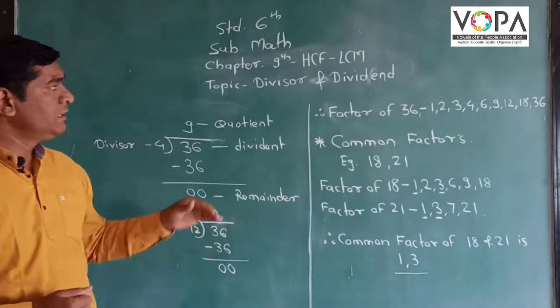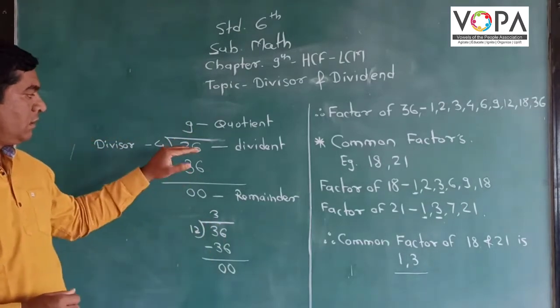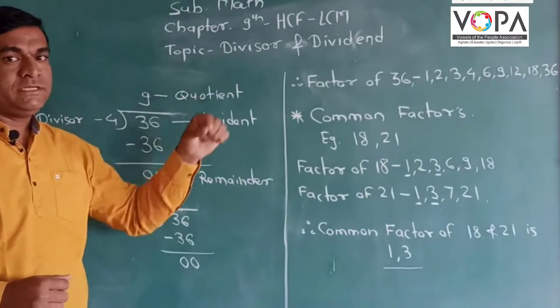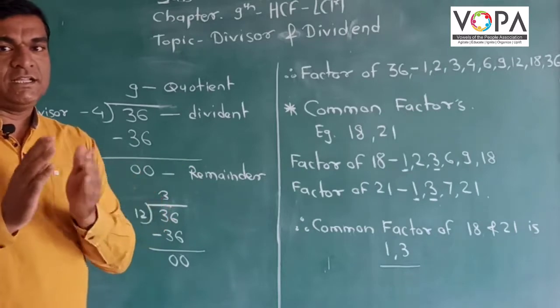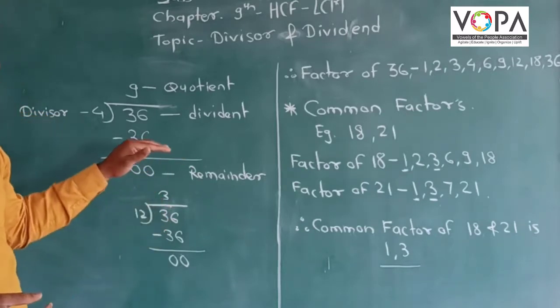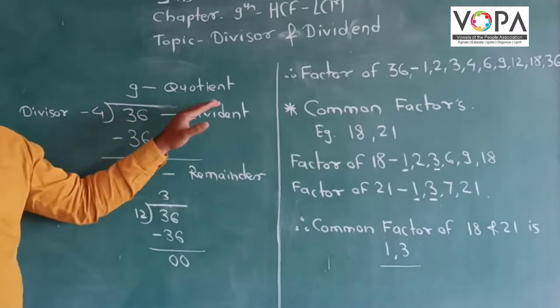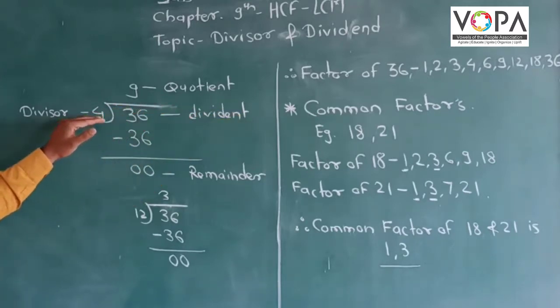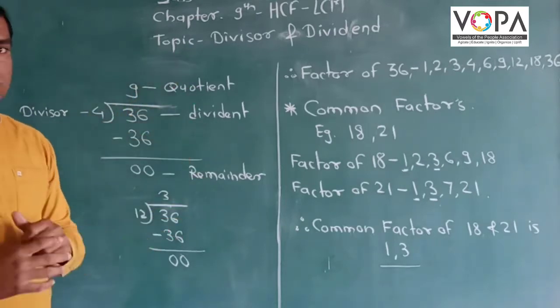What is Divisor and Dividend? If you have a divisor and dividend, you can divide the number, just like 36 divided by 4. Here 4 is called the divisor. In this case, we will divide the number.